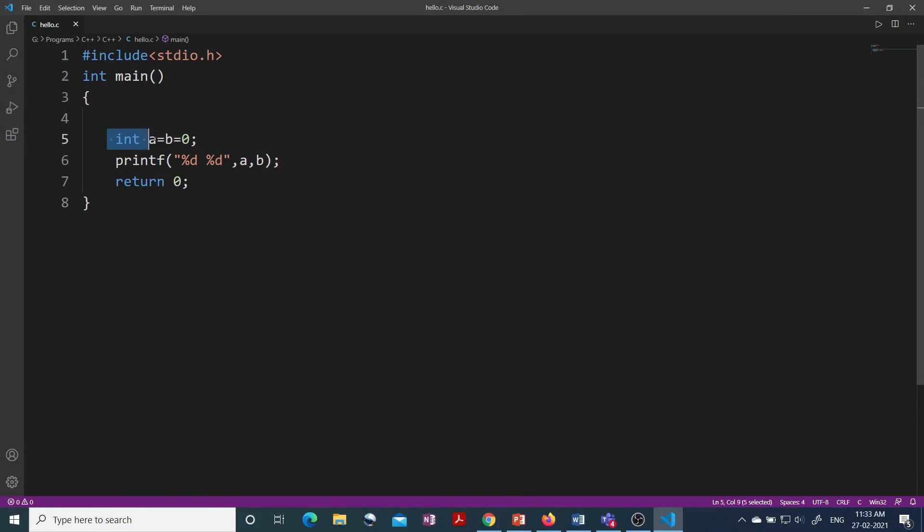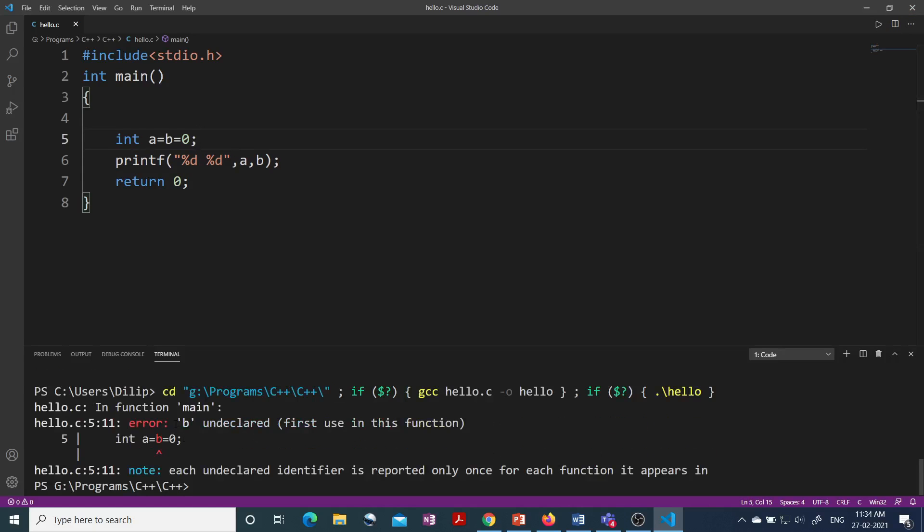So here you can see I have written the same statement int a=b=0 and then I was to print the value of a and b. So let's compile this. So you can see we are getting the error b undeclared.